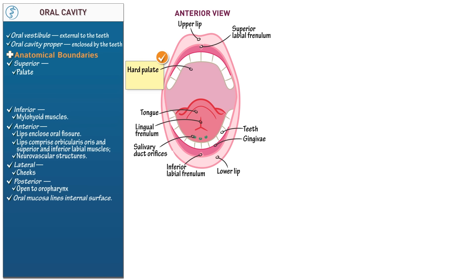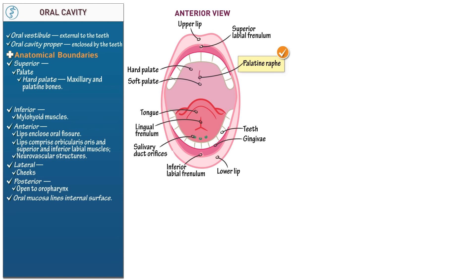Next, indicate the hard and soft palates of the roof of the mouth. The hard palate forms the anterior two-thirds of the palate and comprises the maxillary and palatine bones. In our diagram, show the palatine raphe, which is a raised midline ridge that signifies where the right and left sides of the palate fused during fetal development. You can feel this ridge along the roof of your mouth with your tongue. Then show the transverse palatine folds, also known as palatine rugae, which are ridges of connective tissue that provide friction to facilitate bolus formation.